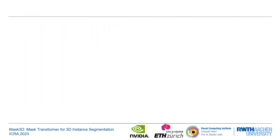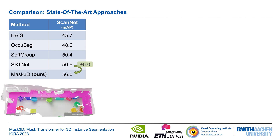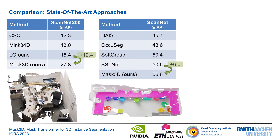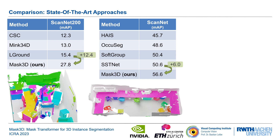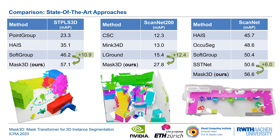Overall, Mask3D shows very promising results. It outperforms top-performing methods on the ScanNet hidden test set by a large margin of 6 MAP. Even on ScanNet 200, with an order of magnitude more class categories, it outperforms highly specialized methods by 12.4 MAP without any modifications. On STPLS3D, a synthetic outdoor dataset, Mask3D achieves state-of-the-art with a margin of 10.9 MAP.